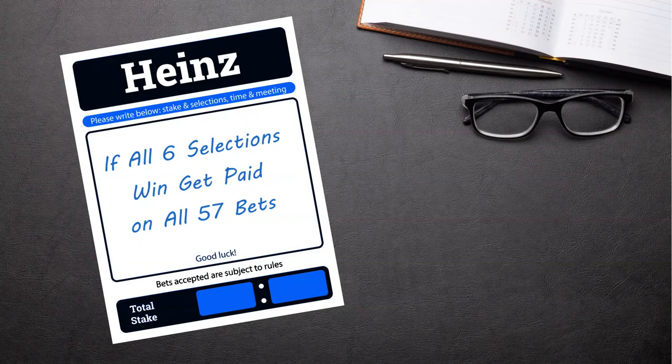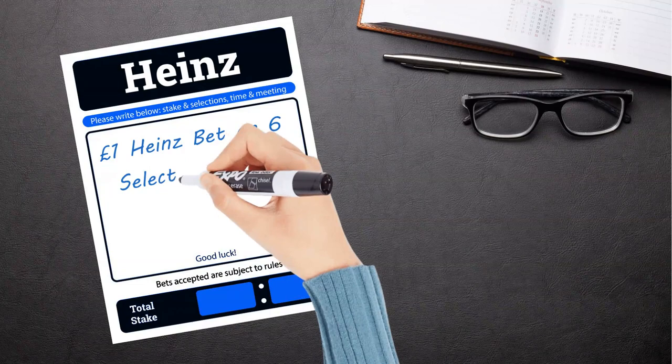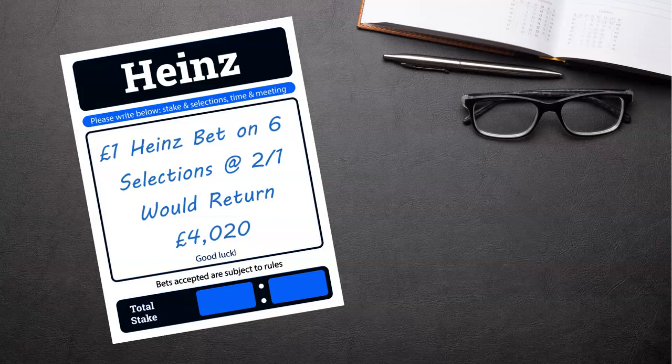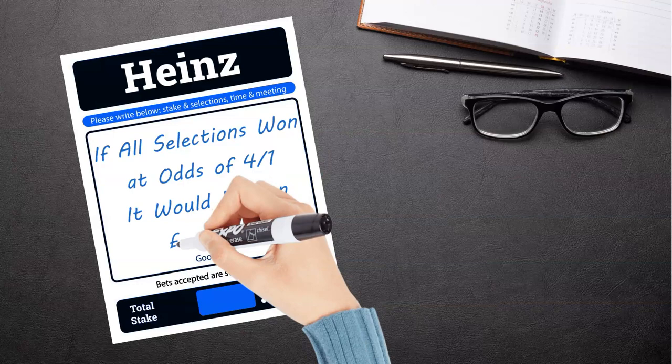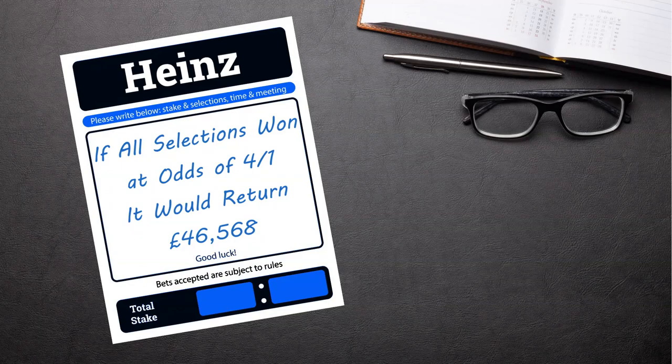For instance, if you placed a one-pound Heinz bet on six selections, whose odds were all two to one, if all six selections won, the bet would return £4020. If all selections won at odds of four to one, it would return £46,568. But the bigger the odds the more likely one or more selections will lose.